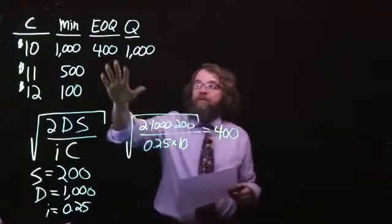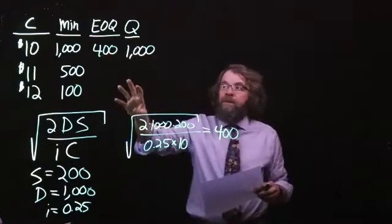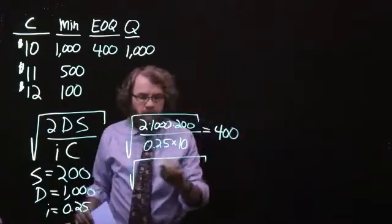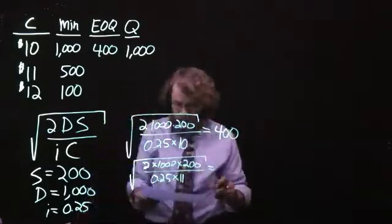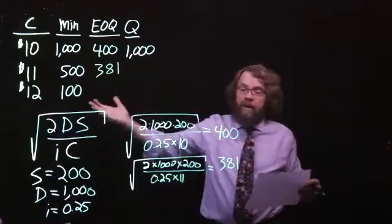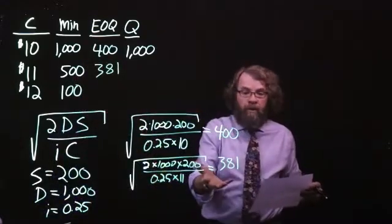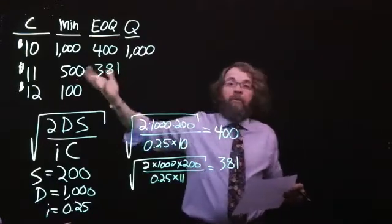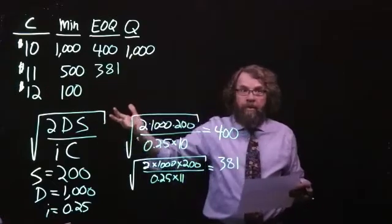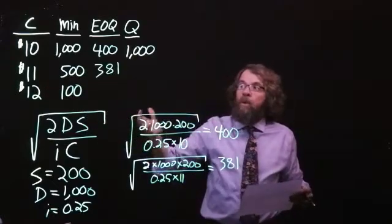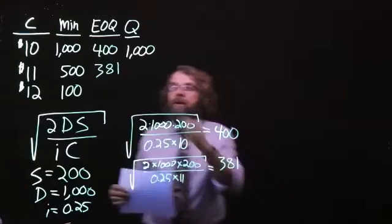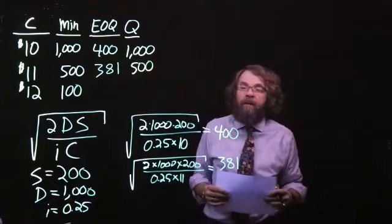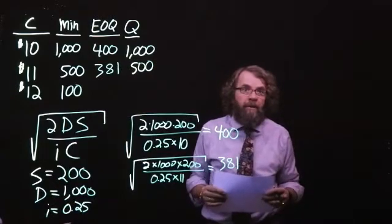Because 400 was not bigger than a thousand, we need to turn our attention to the next cheapest price, the price of $11. When the price is $11, the EOQ returns a value of 381, which is again unfortunately not large enough to get us the price of $11. Therefore, in a few minutes we will compute the total annual cost using the order size that we would have to use to get that price of $11, namely an order size of 500 units.